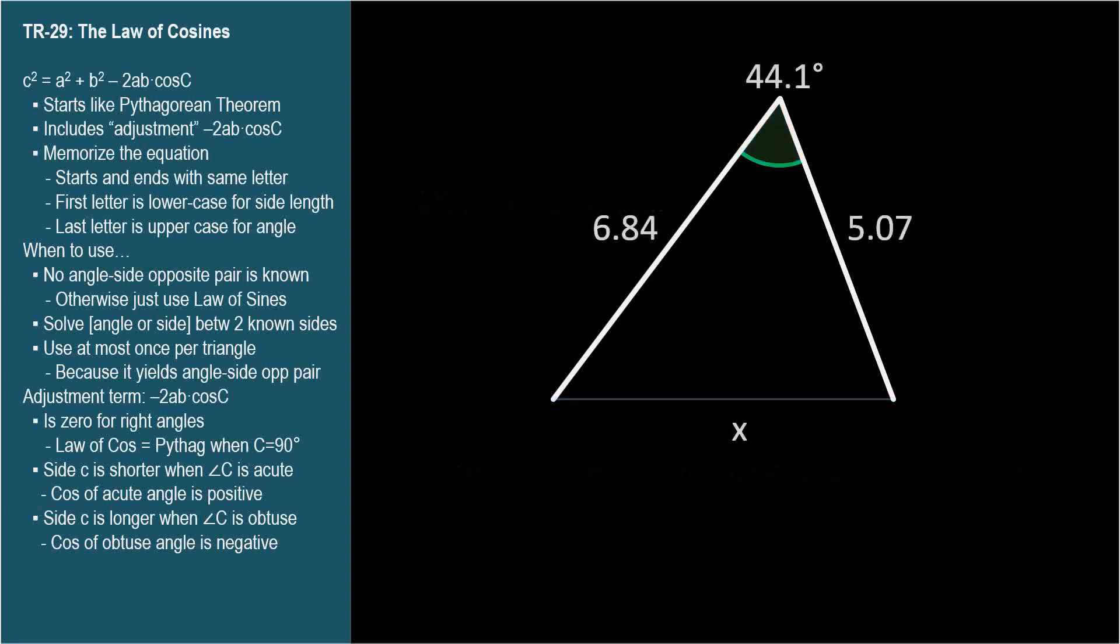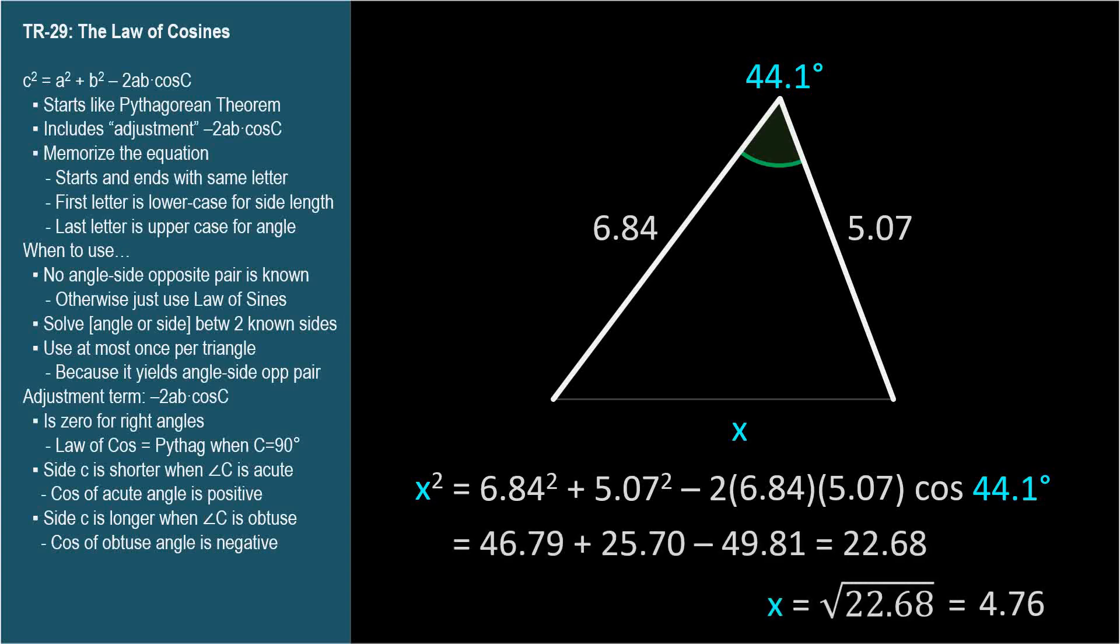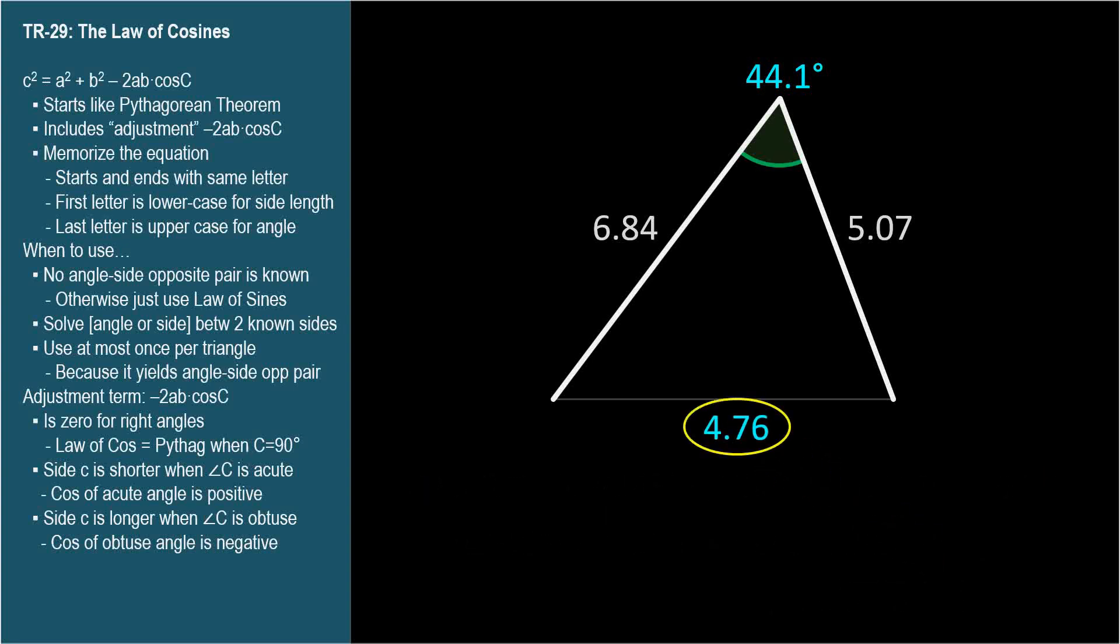Here we have two sides and the angle between them. We're going to use the Law of Cosines to find the length of this side, x. We're going to start the Law of Cosines equation with x, and we're going to end it with the cosine of the angle opposite x, like this. We start by adding the squares of the other two sides, like the Pythagorean Theorem. Then we subtract two times their product, multiplied by the cosine. The missing side is 4.76 units long. We can now use the Law of Sines to find the other angles.